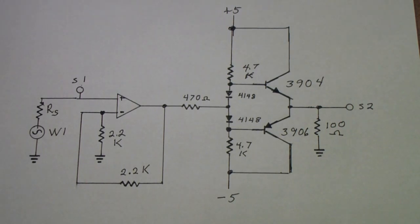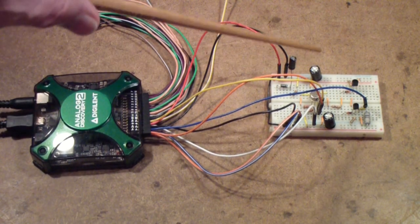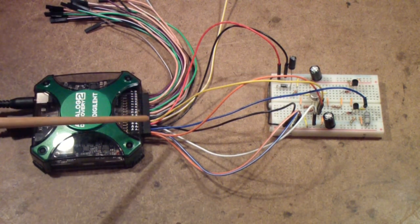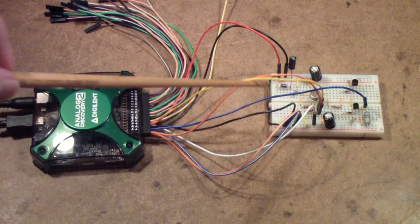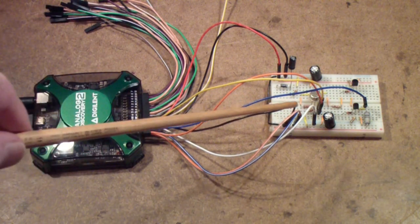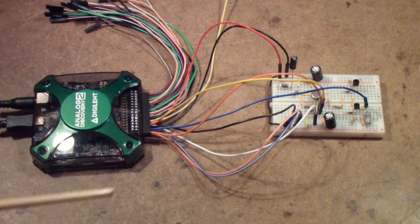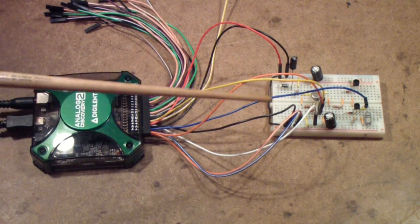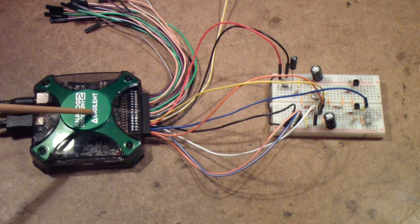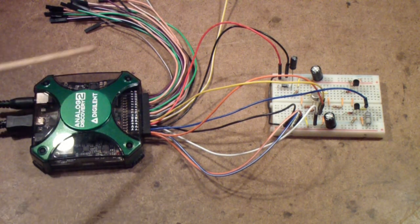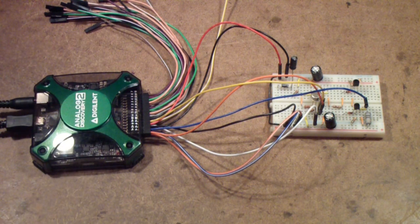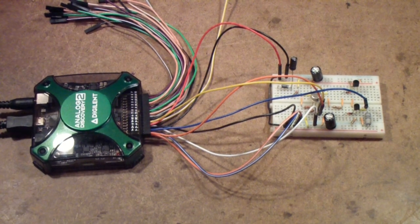Here is the breadboard with the circuit built up on it. The Analog Discovery is doing a number of things here. One is it's supplying the input signal. The second is it's providing a two channel oscilloscope to look at the input and the output. And finally it's also providing plus and minus five volts.